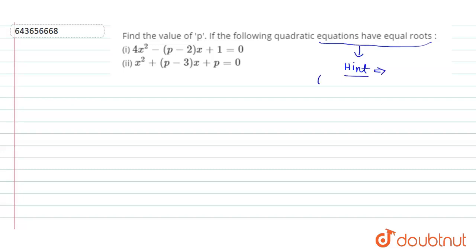When roots are equal, our quadratic equation condition says b squared minus 4ac should be zero. This b squared minus 4ac comes from the standard equation of a quadratic equation, which is ax squared plus bx plus c equals zero. I hope you are clear on where it is coming from — this is the only important thing for solving this question.